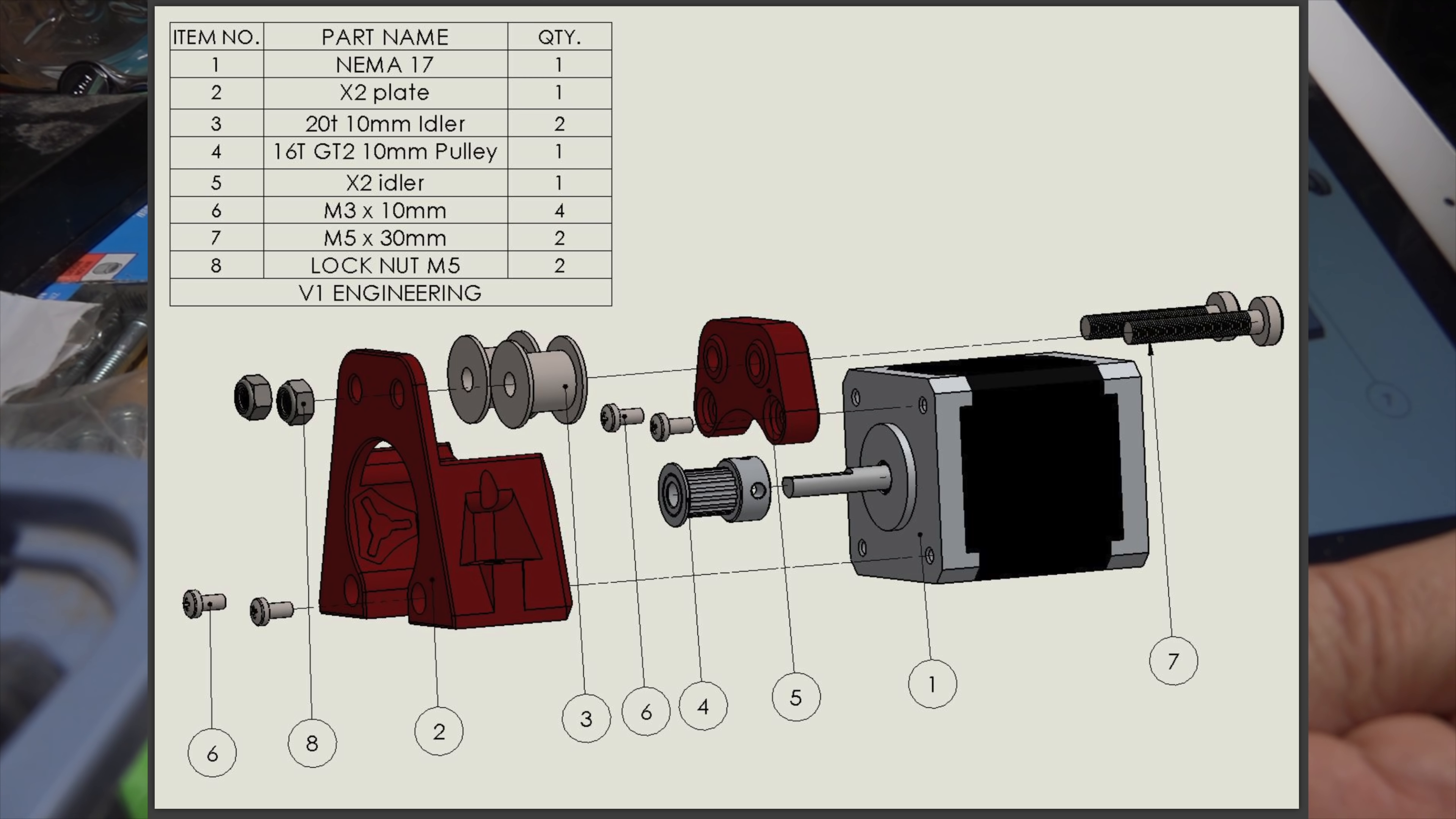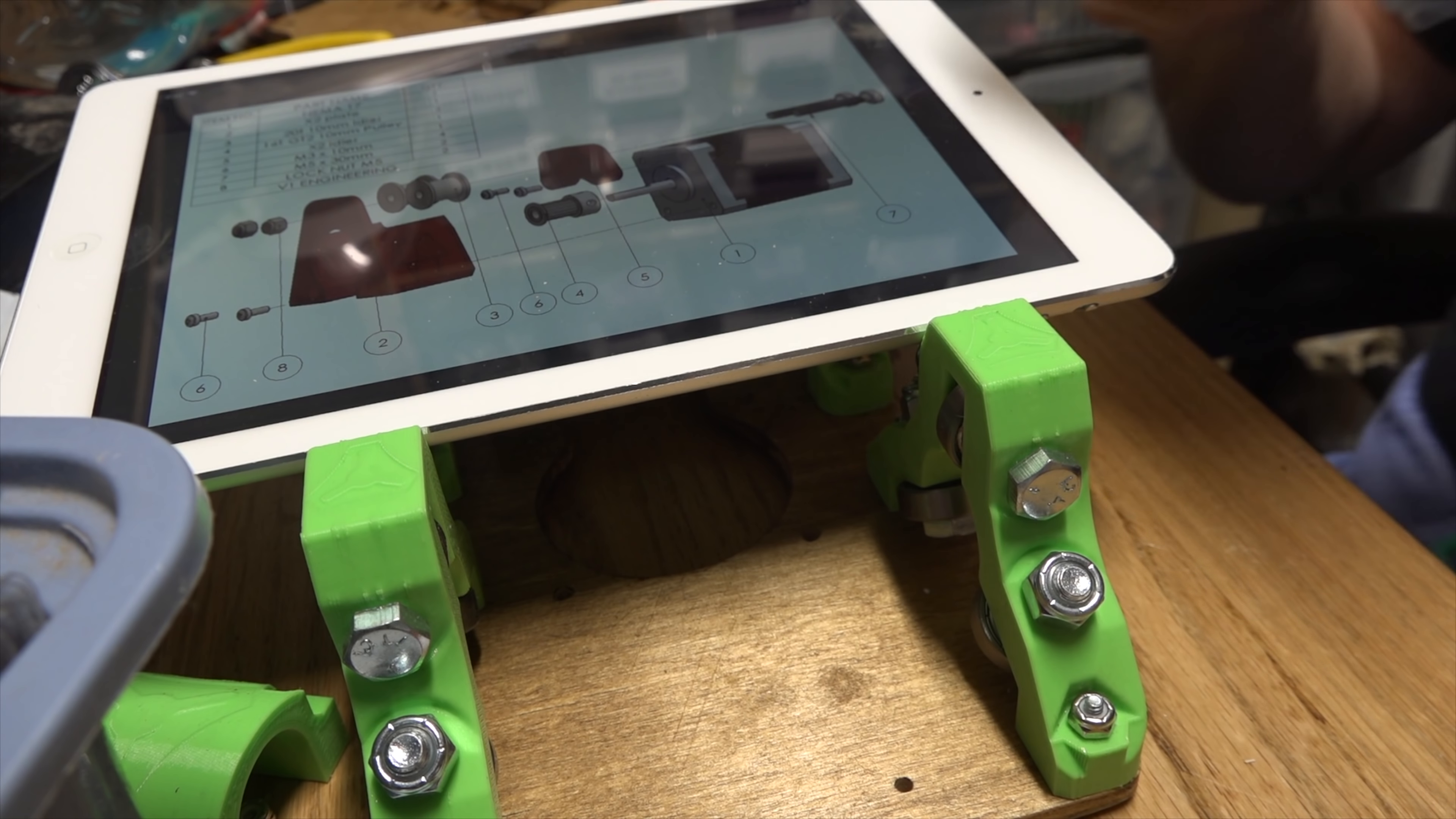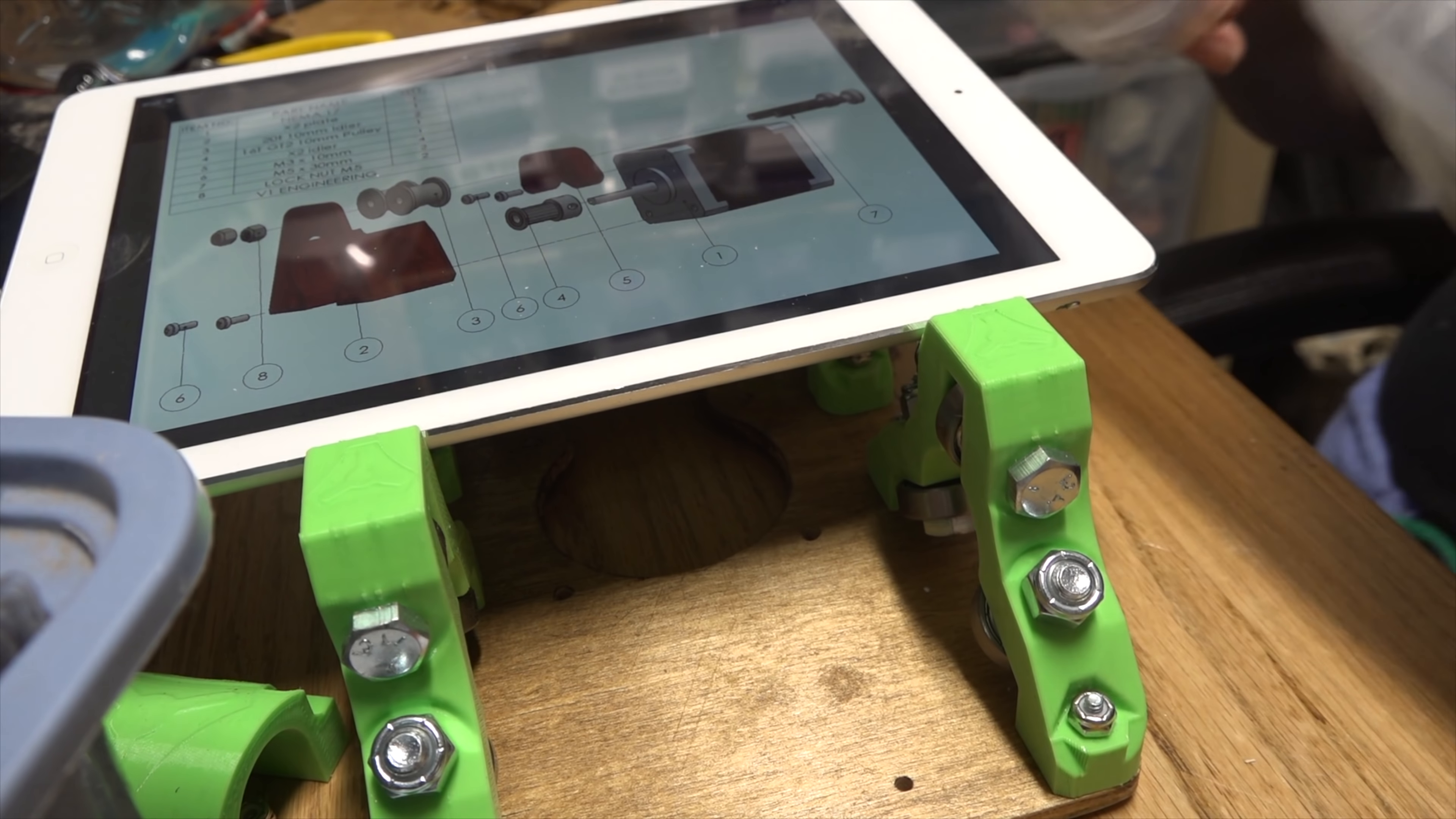So we need to get those large 10 millimeter thick idler wheels. I've got some that I ordered from V1 Engineering here, so I think it's in this box. Let's find out. Fresh from V1 Engineering, I've got the correct size pulleys or drive sprockets, the idler wheel, and a bunch of the 10 millimeter belts here that we'll need later on.